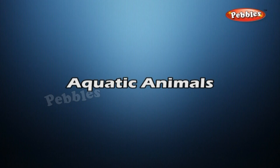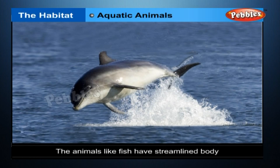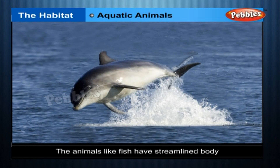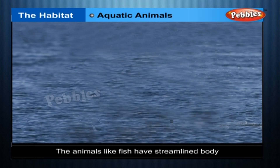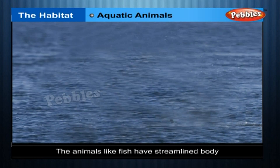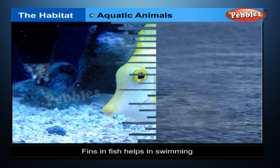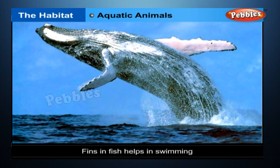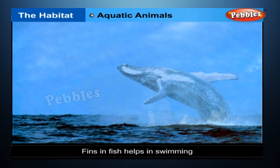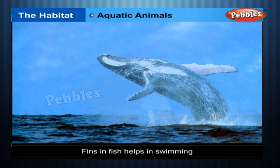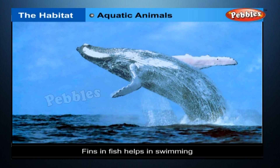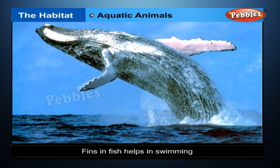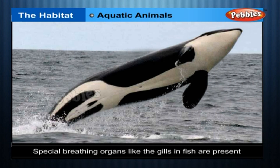Aquatic animals like fish have a streamlined body. Such a body reduces friction and helps in swimming. Fins in fish help in swimming. To prevent rotting and decay, animals develop special coverings like scales and waxy coating. Special breathing organs like the gills in fish are also present.